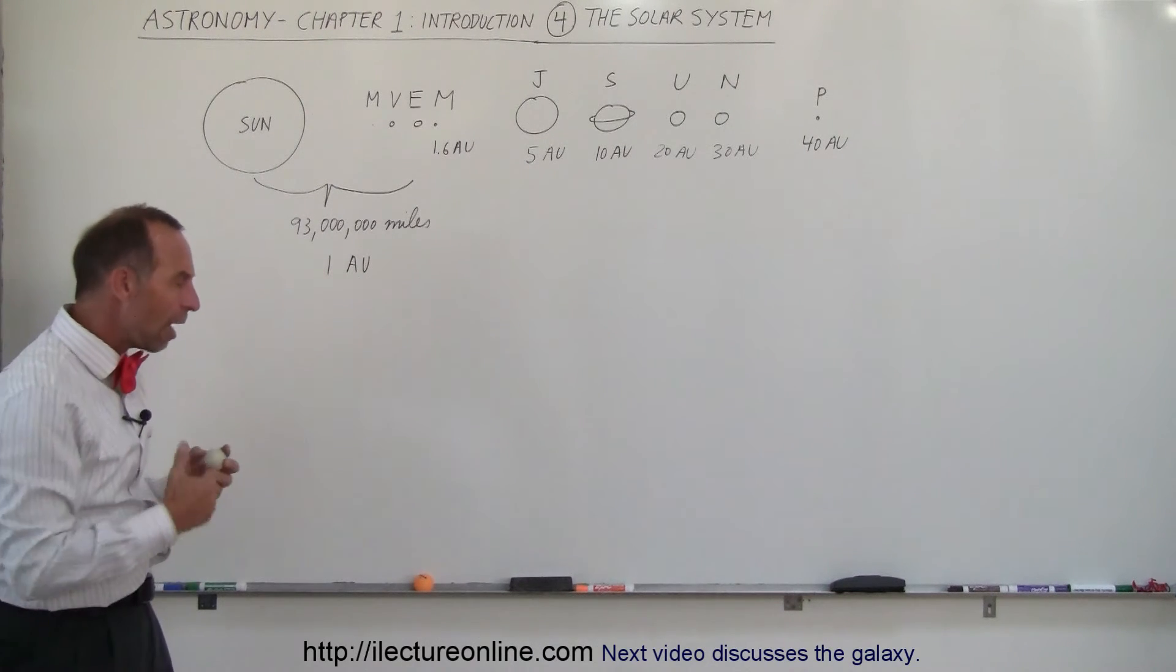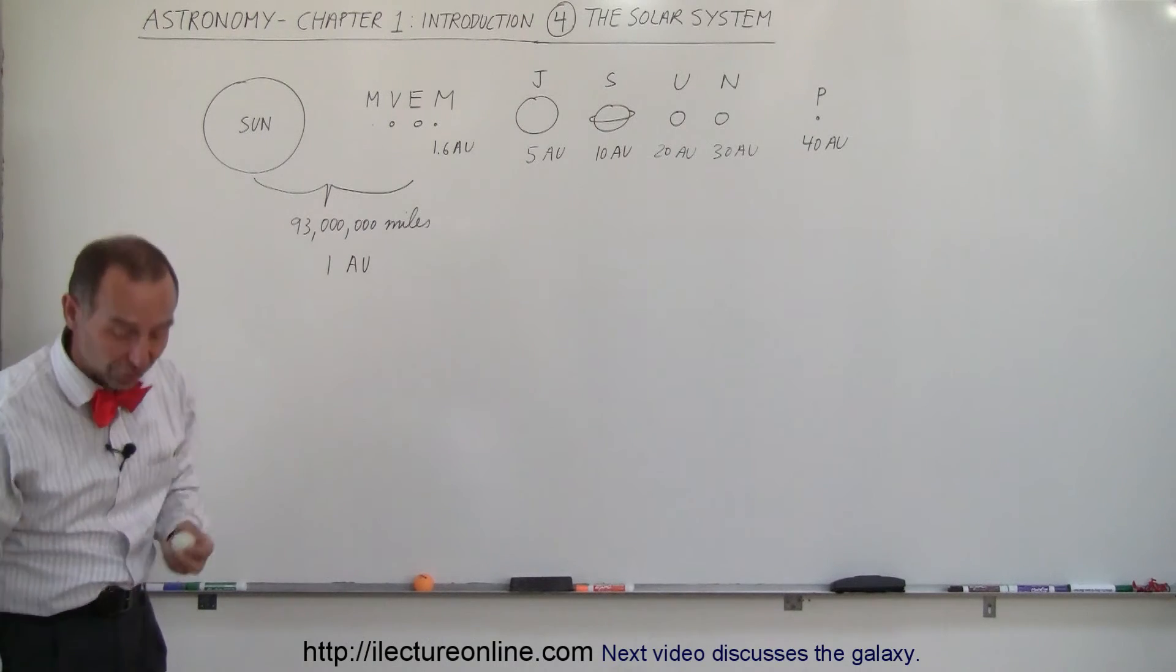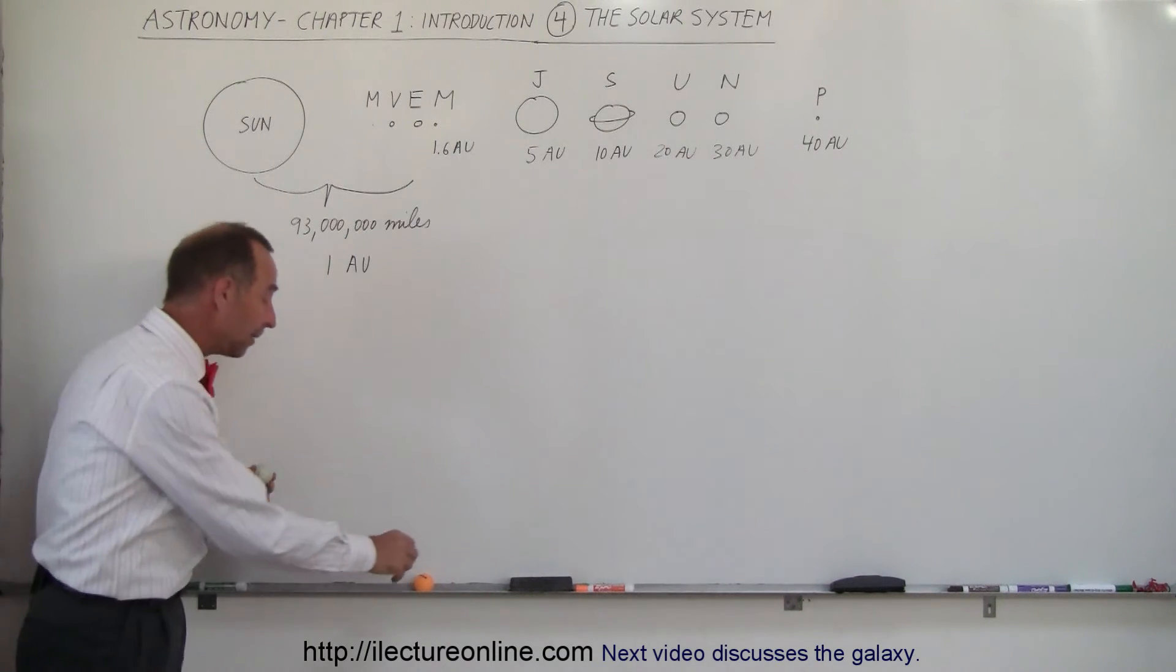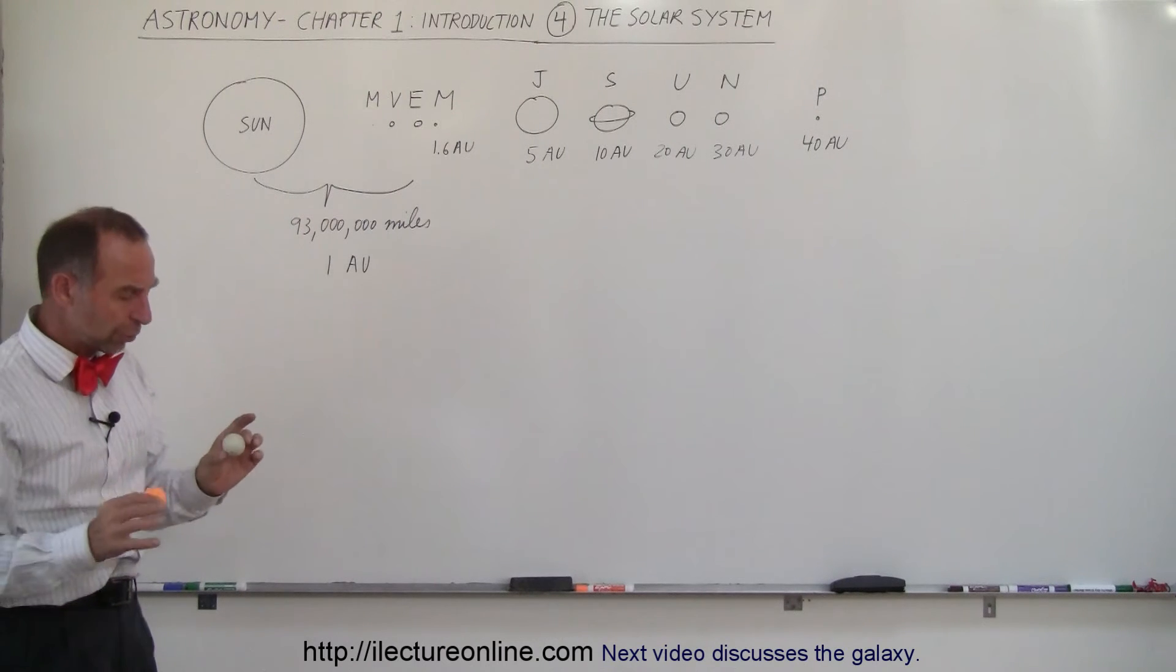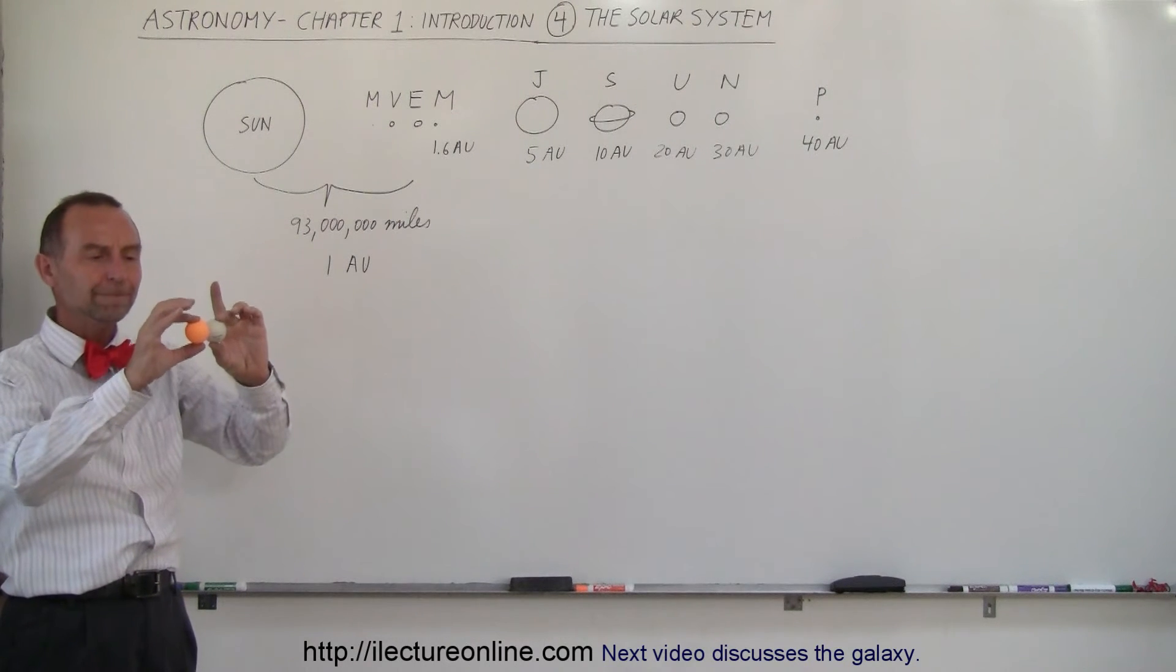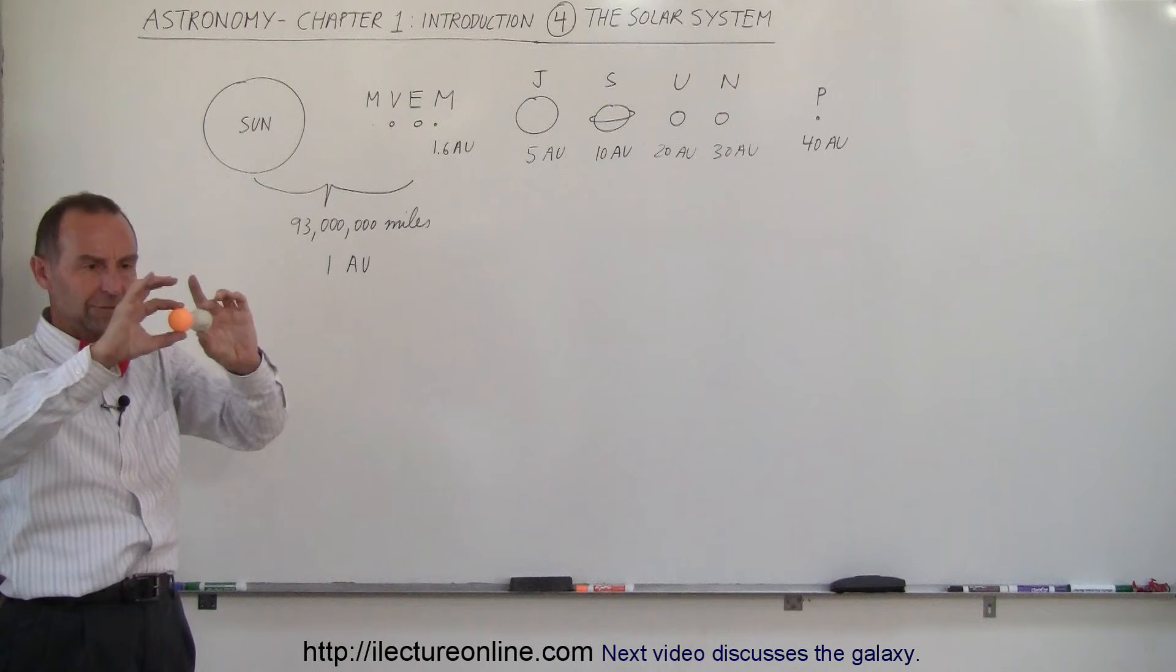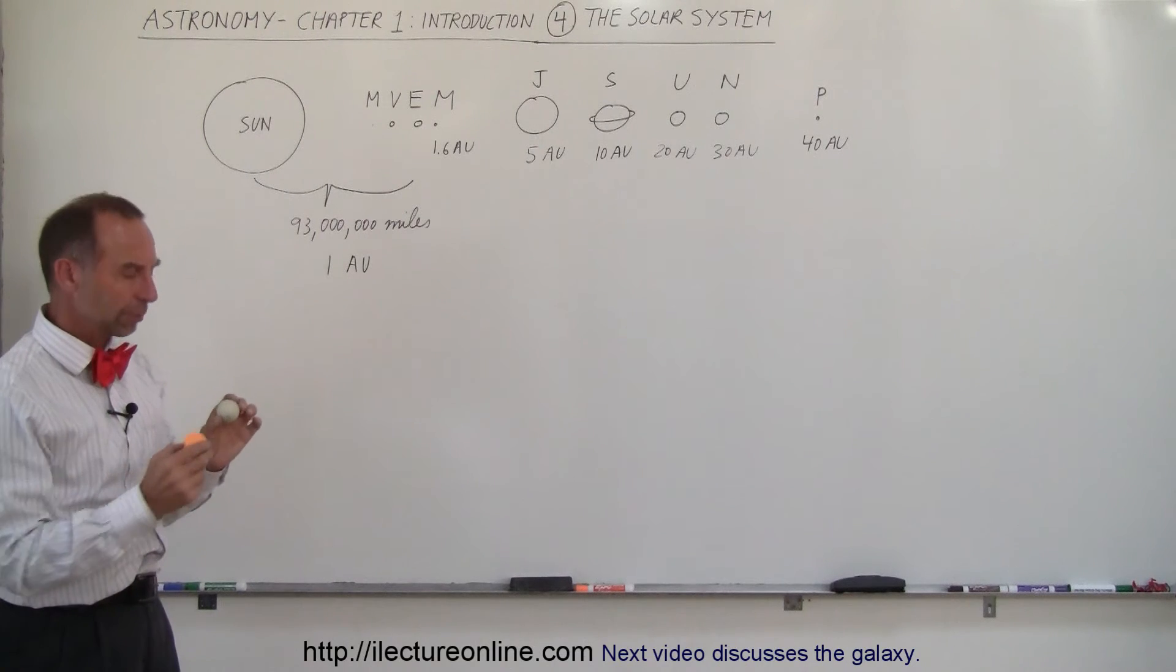Now, with that size, how far would you have to go to get to the next nearest star? Well, it turns out, let's say the next nearest star, which is Alpha Centauri, which is about the same size of the Sun, at this scale would be about this size right here, would be the orange-colored ping-pong ball.